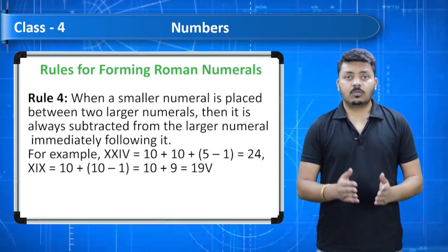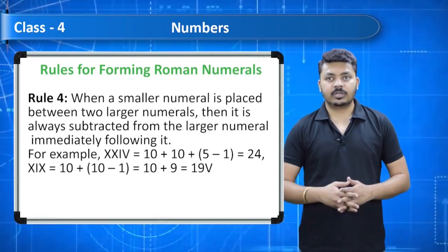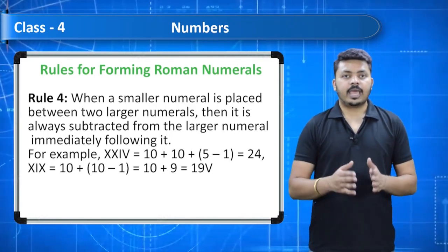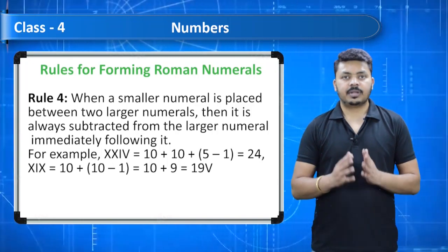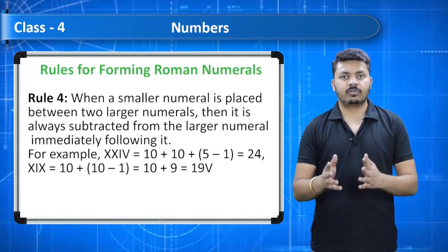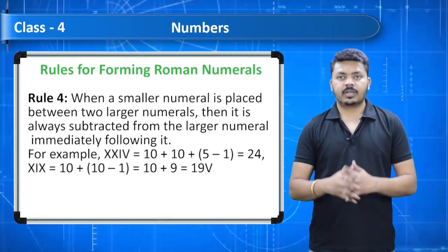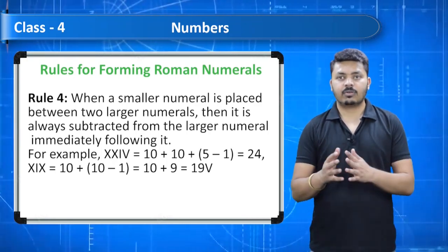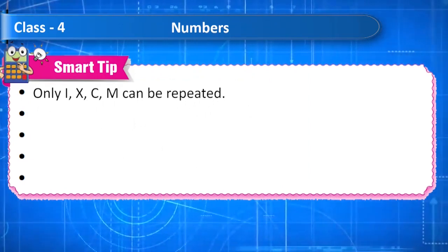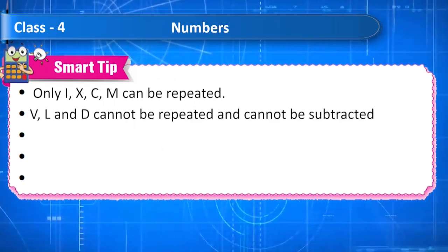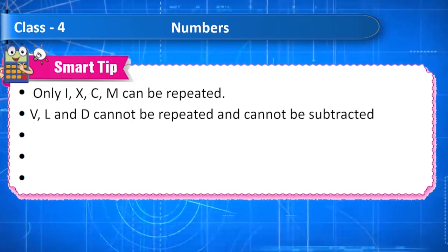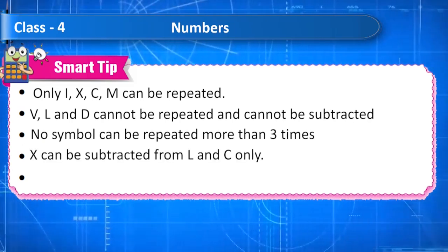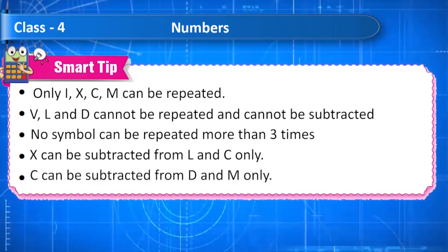Rule 4: when a smaller numeral is placed between two larger numerals, it is always subtracted from the numeral immediately following it. For example, XXIV = 10 + 10 + (5 − 1) = 24. XIX = 10 + (10 − 1) = 19. Smart tip: only I, X, C, M can be repeated; V, L, and D cannot be repeated or subtracted. No symbol can be repeated more than 3 times. X can be subtracted from L and C only; C can be subtracted from D and M only.